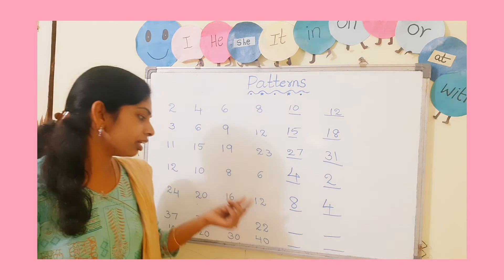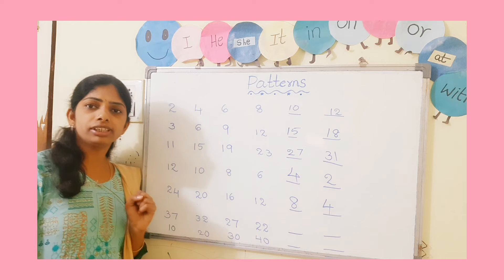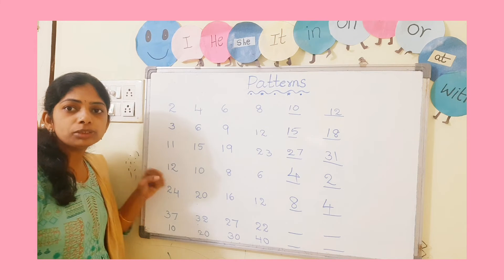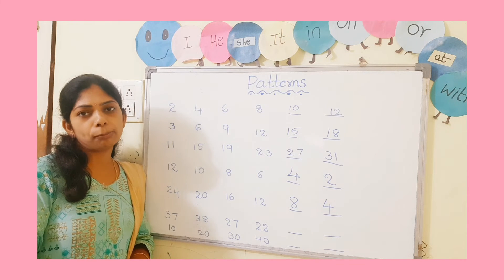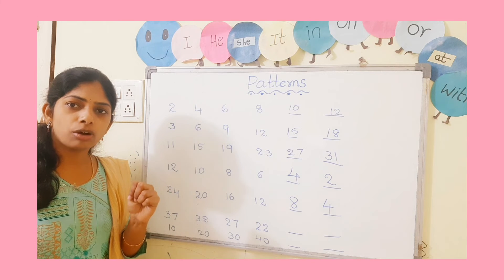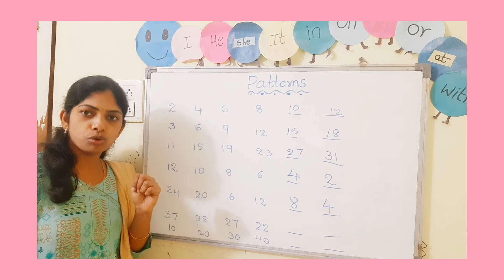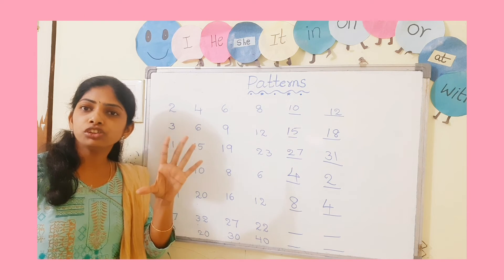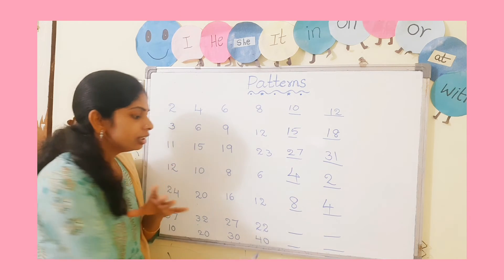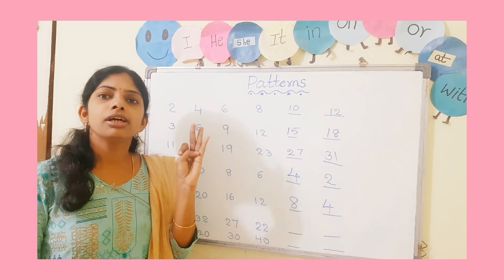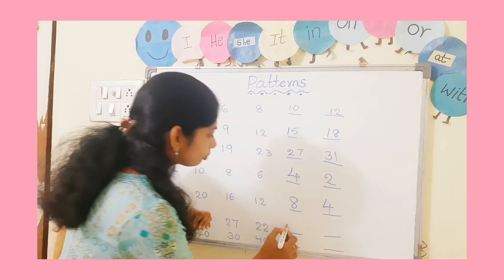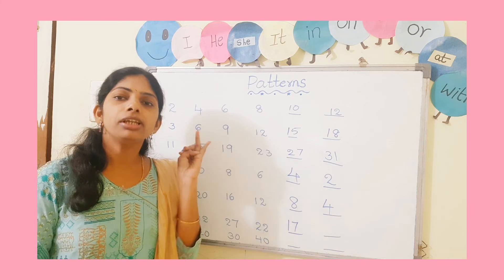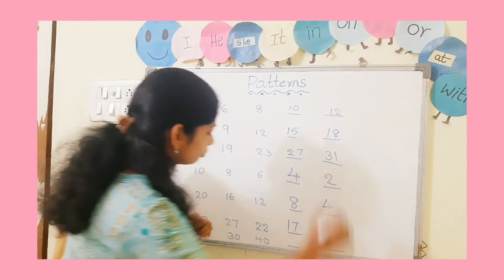Next example: 37, 32, 27, 22. The first number 37 is bigger than 32, so it is decreasing order — big to small. Count backward: 37, before 36, 35, 34, 33, 32 — that is 5 numbers backward. From 22: 22, before 21, 20, 19, 18, 17. Then from 17: 17, before 16, 15, 14, 13, 12. So the next numbers are 17 and 12, decreasing by 5 each time.